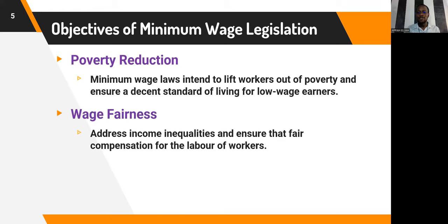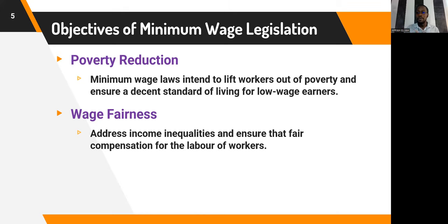Another reason is wage fairness. Minimum wage is set up to address income inequalities. For instance, the governor of the Bank of Ghana earned around 80,000 Ghana cedis a month, while a senior high school teacher was earning around 1,800 to 2,200 Ghana cedis per month. Minimum wages are set to close that gap and address inequalities in income distribution, ensuring fair compensation for the labor of all workers.